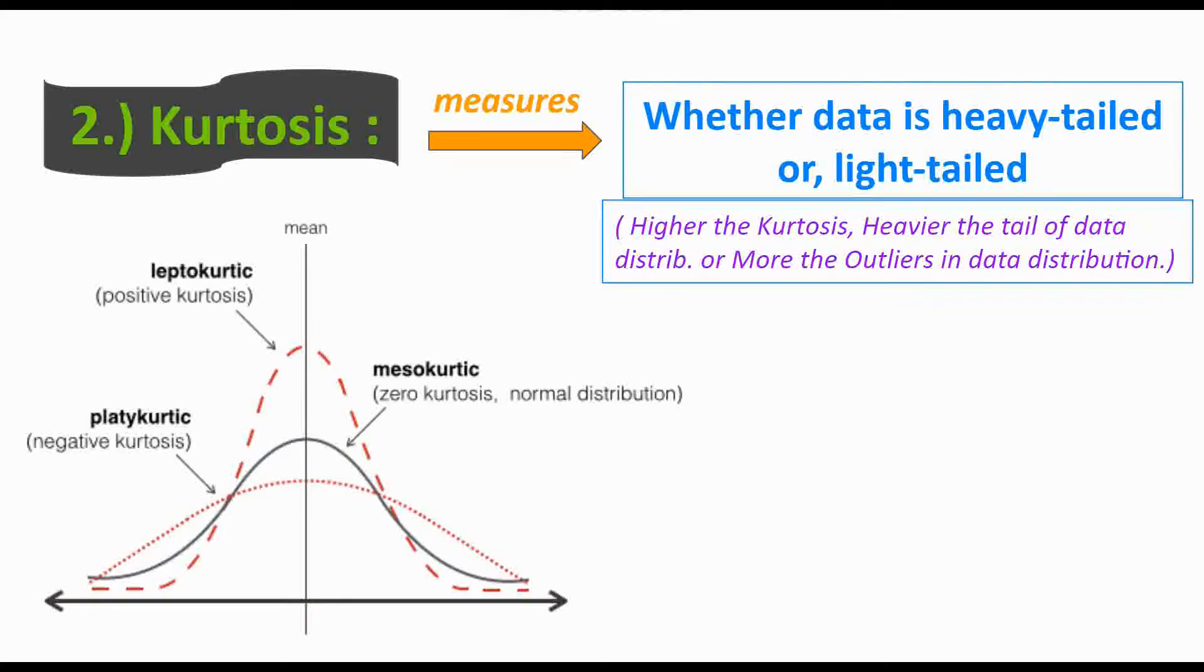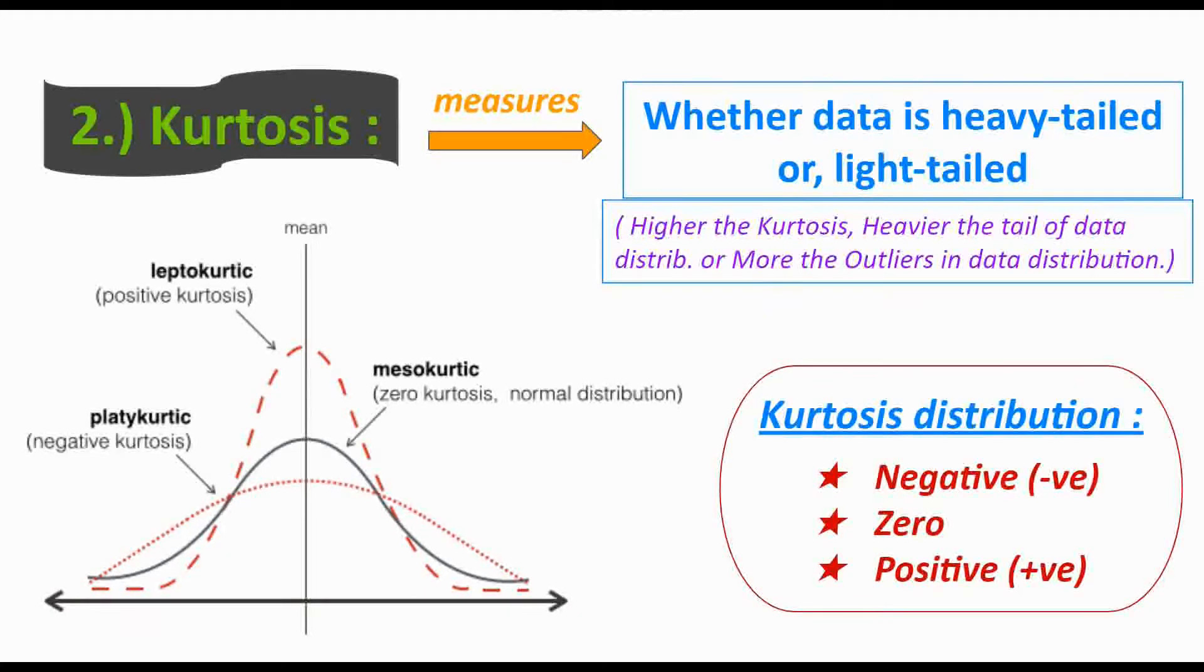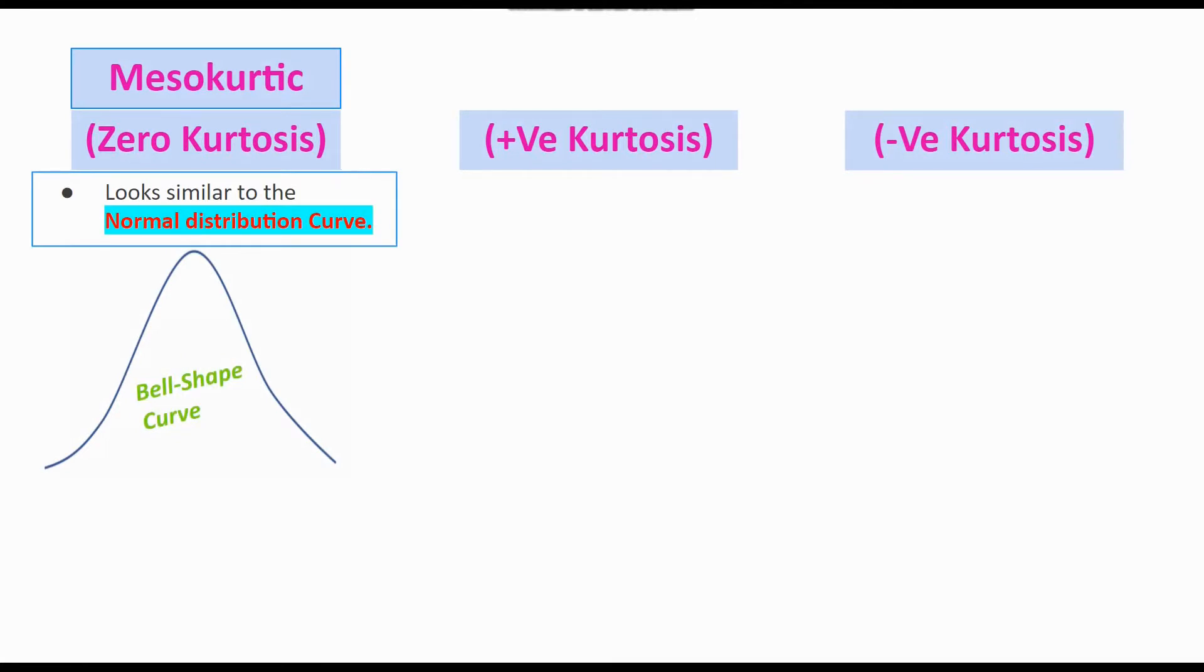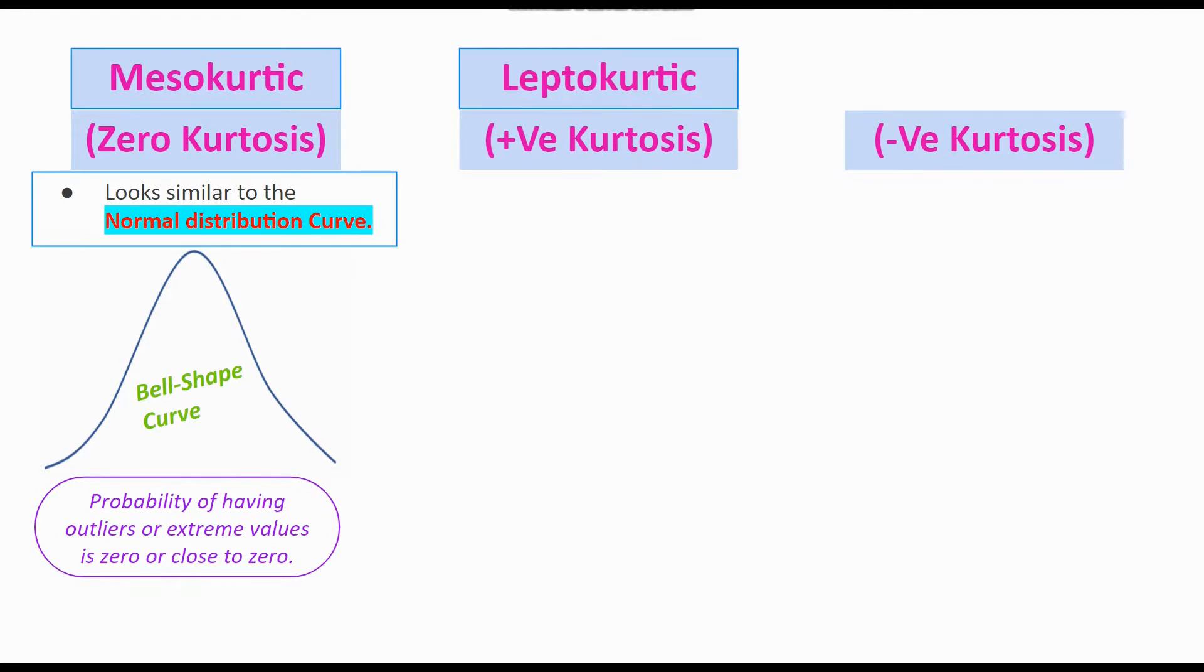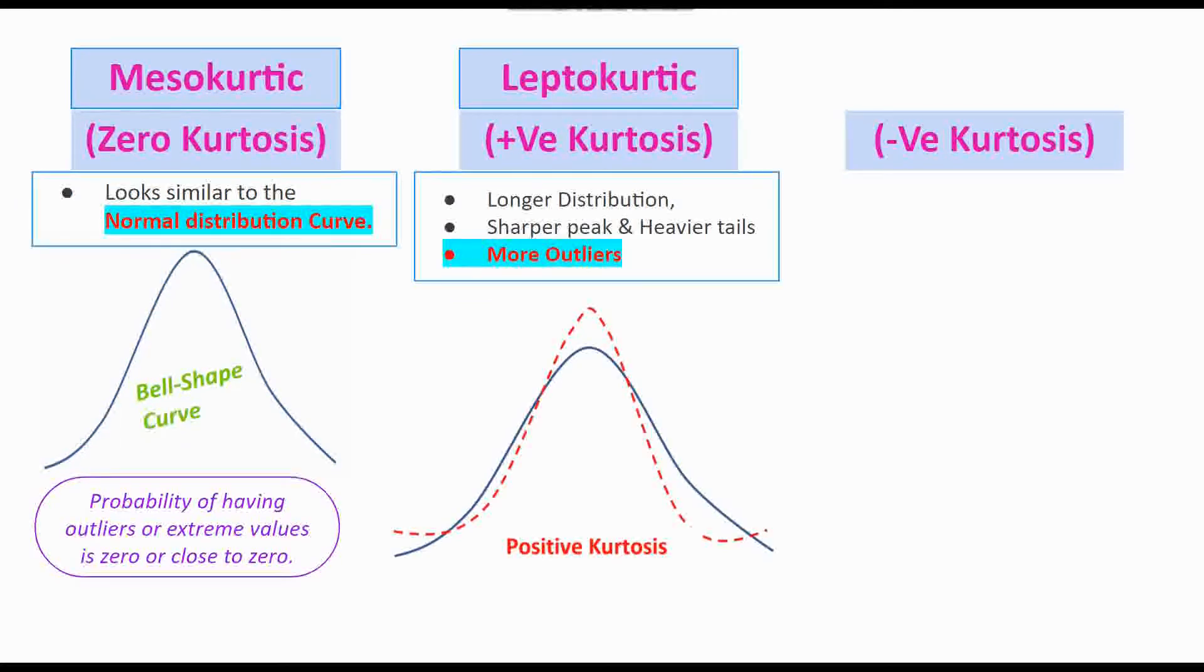Let's understand zero kurtosis, positive, or negative kurtosis. Zero kurtosis is also known as mesokurtic, and it looks similar to the normal distribution curve, the bell-shaped curve. You can say that the probability of having outliers or extreme values is more or less close to zero. Then we have positive kurtosis, also known as leptokurtic, and we see longer distribution here. You can see the red dotted line - it shows a sharper peak and heavier tails at both ends. Heavier tails means more outliers.